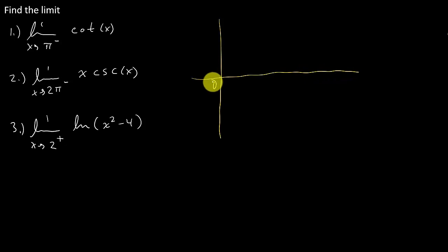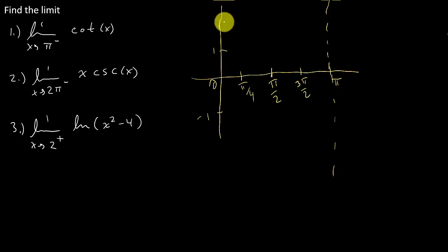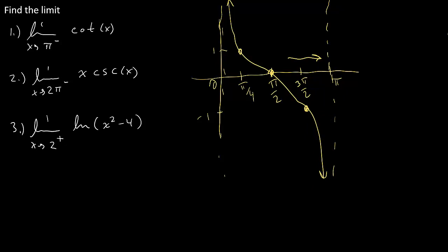We know how to graph cotangent. If we've got zero, and then we've got pi, that would be pi over two, three pi over two, and pi over four. There's one, there's negative one, and with cotangent we've got asymptotes at zero and pi. So cotangent would look something like this, and we can see as we're coming in to pi from the left-hand side, what is the graph doing? Well, it's going to negative infinity. So we could see that answer as negative infinity.